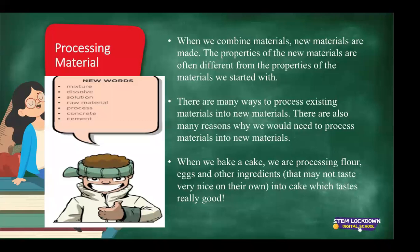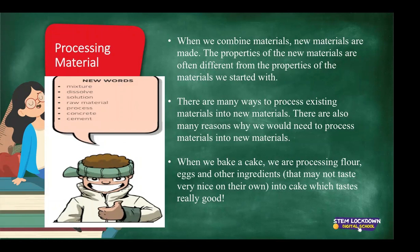The properties of the new materials are often different from the properties of the materials we started with. Imagine you want to bake a birthday cake for your friend, and you have all the ingredients in front of you. The final outcome will be a complete cake — it won't be eggs, it won't be flour, it won't be sugar. The raw materials in the process of producing a cake will be your flour, your sugar, your eggs, but the final outcome will be completely different compared to the raw materials we started with. There are many ways to process existing materials into new materials, and many reasons why we would need to do so.